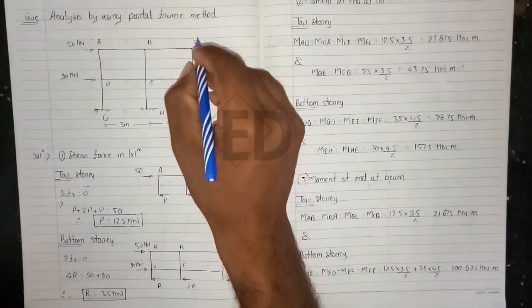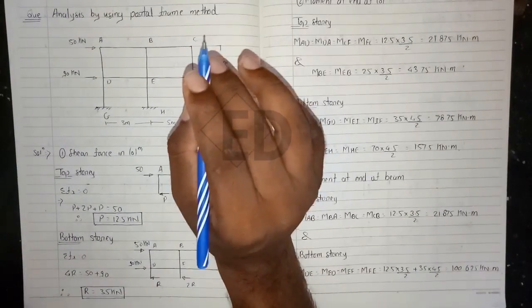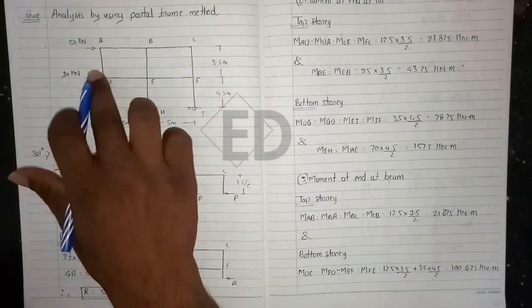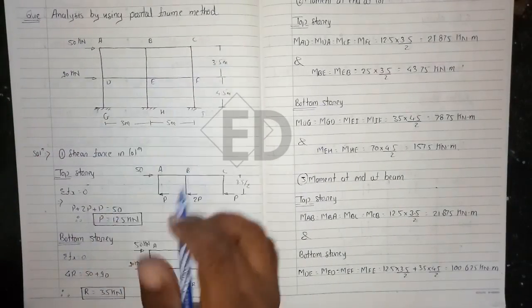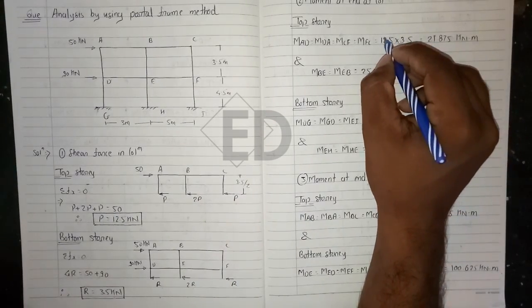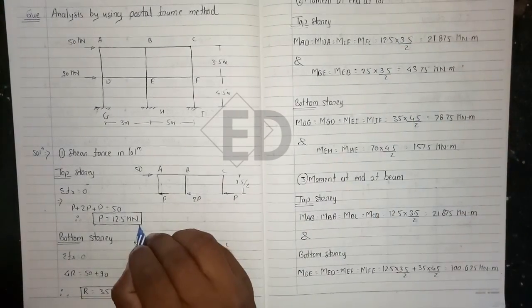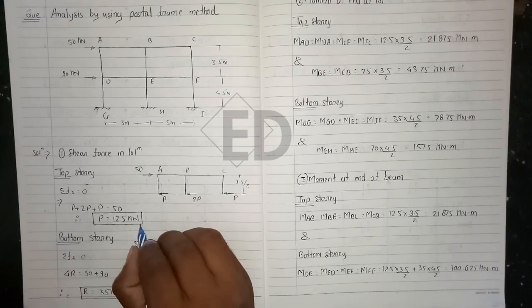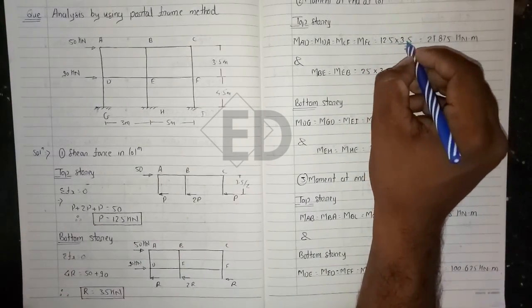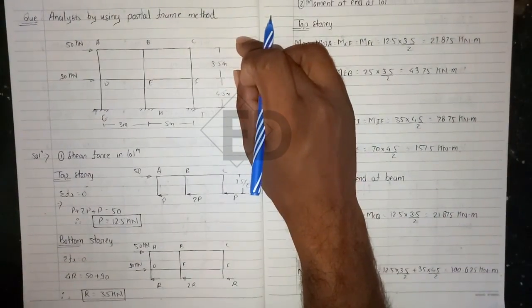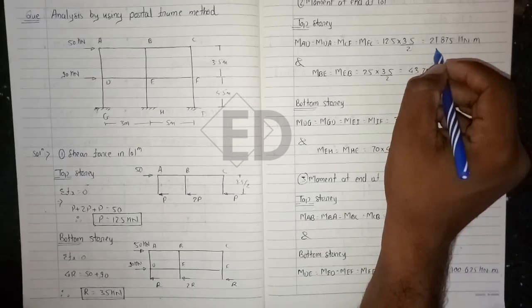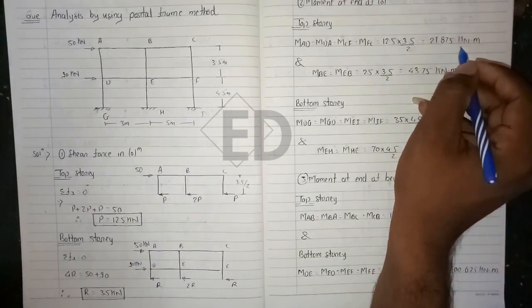Similarly, the moment from C to D is the same as the moment from F to C. These two moments are the same because the force acting here is the same, that is p. That is why, directly: 12.5 into h/2, where h is 3.5. So we directly calculate this and we get 21.875 kNm. This is the value of the moment for this span.